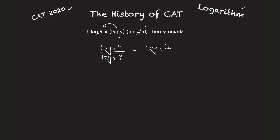Log base 4 and log base 4 will cancel from here, so this will eventually become log 5 upon log y, because the 4s cancel. You can write this as log base y of 5, and this entire thing equals log base 6 of square root of 5.